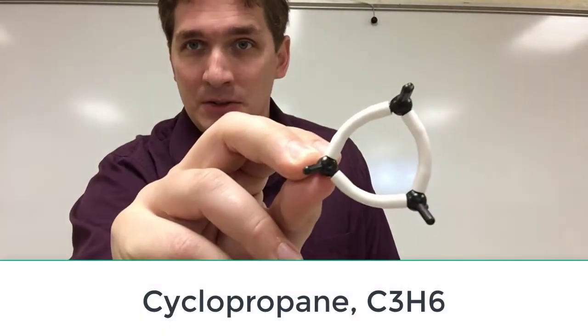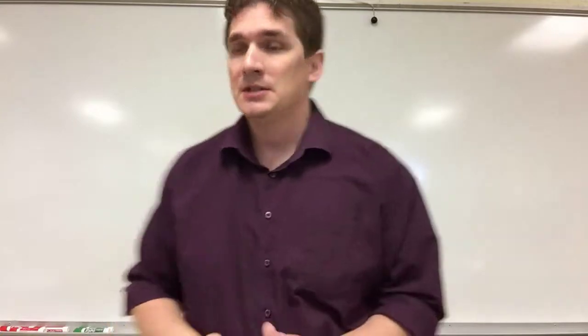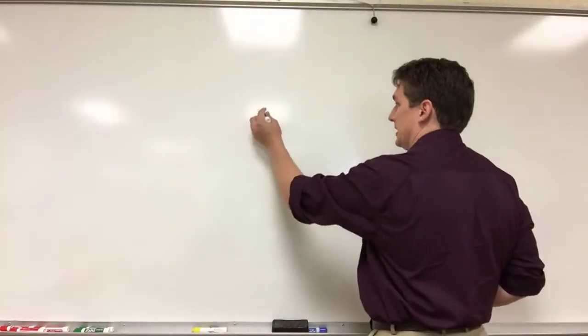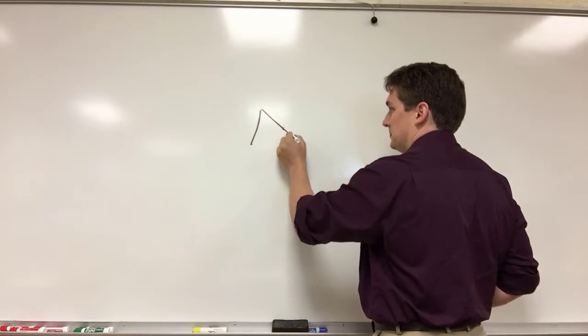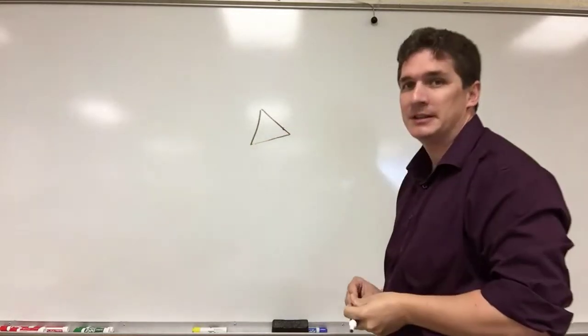Now the cyclopropane is a C3 ring and you can tell by the fact I had to use little rubber holders to build this, that this is not a particularly stable ring, although it's a synthetically interesting ring. Now when we look at this from above, we were to draw the line structure, we'd have something very boring, we'd have a triangle like this.